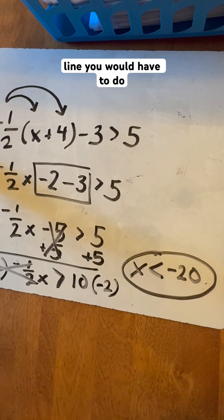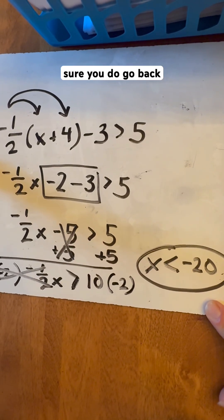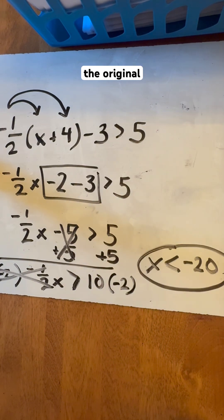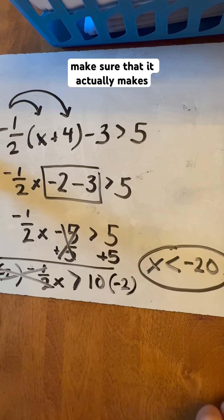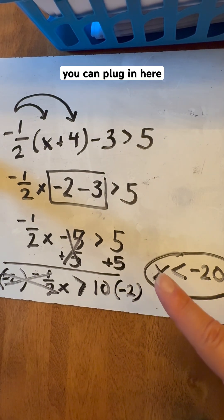And if you had a number line, you would have to do the number line as well. Now what I always suggest doing is making sure you do go back in and substitute your answer in to the original equation and make sure, or I should say inequality statement in this case, to make sure that it actually makes sense. So a number less than negative twenty, you can plug in here.